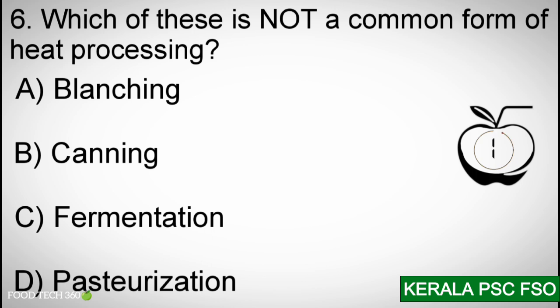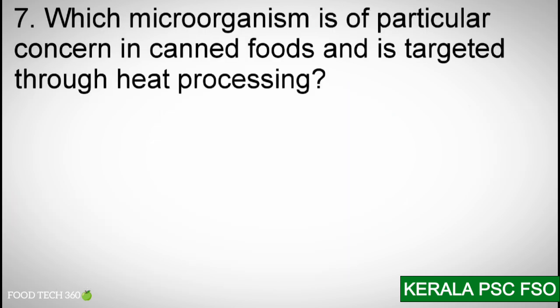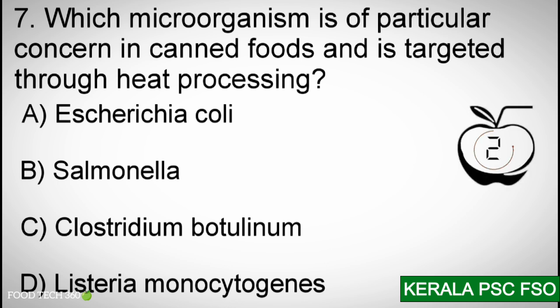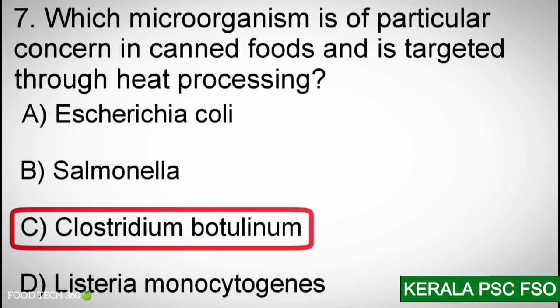Correct answer: C — Fermentation. Q7: Which microorganism is of particular concern in canned foods and is targeted through heat processing? Options: A) Escherichia coli, B) Salmonella, C) Clostridium botulinum, D) Listeria monocytogenes. Correct answer: C — Clostridium botulinum.